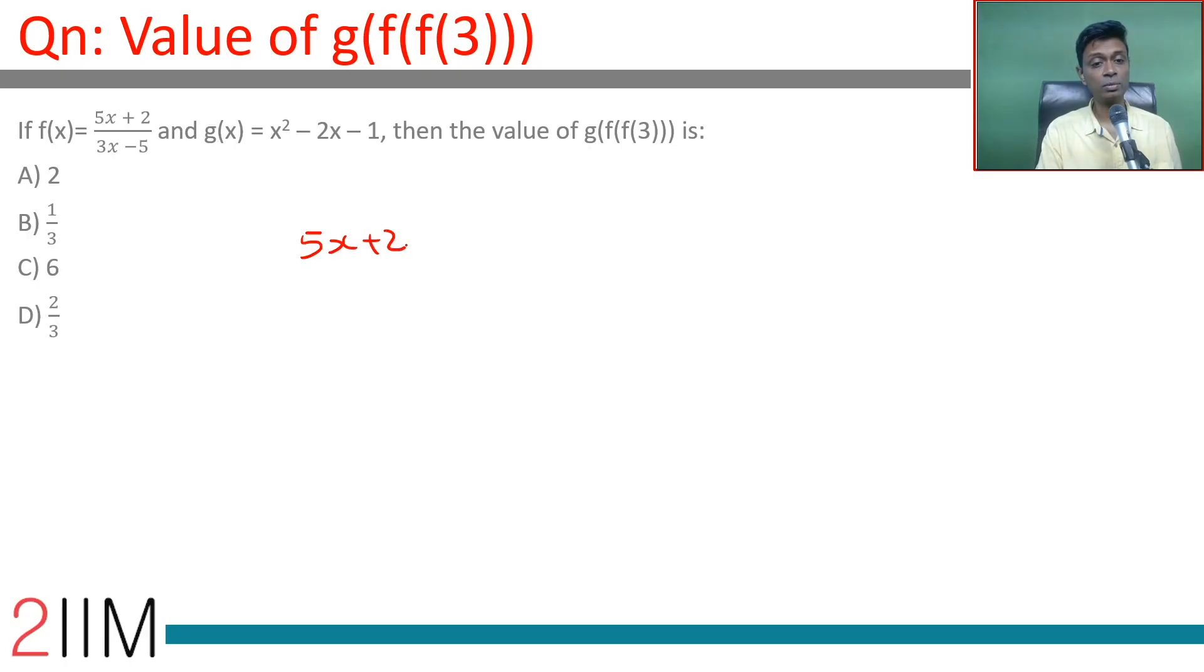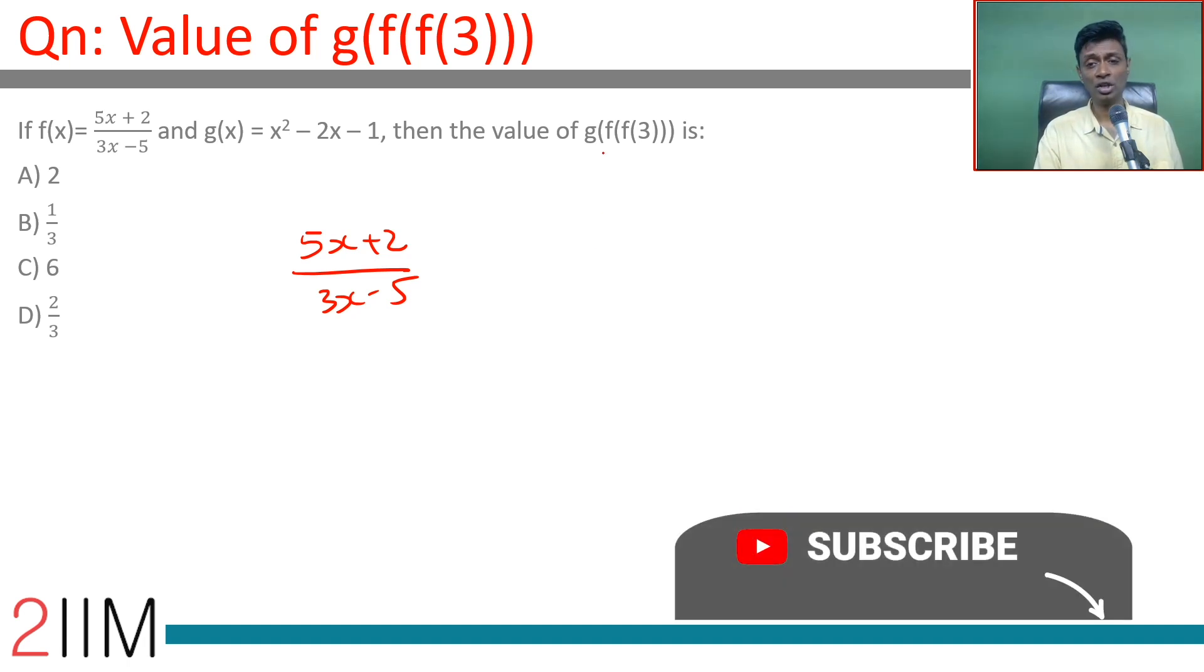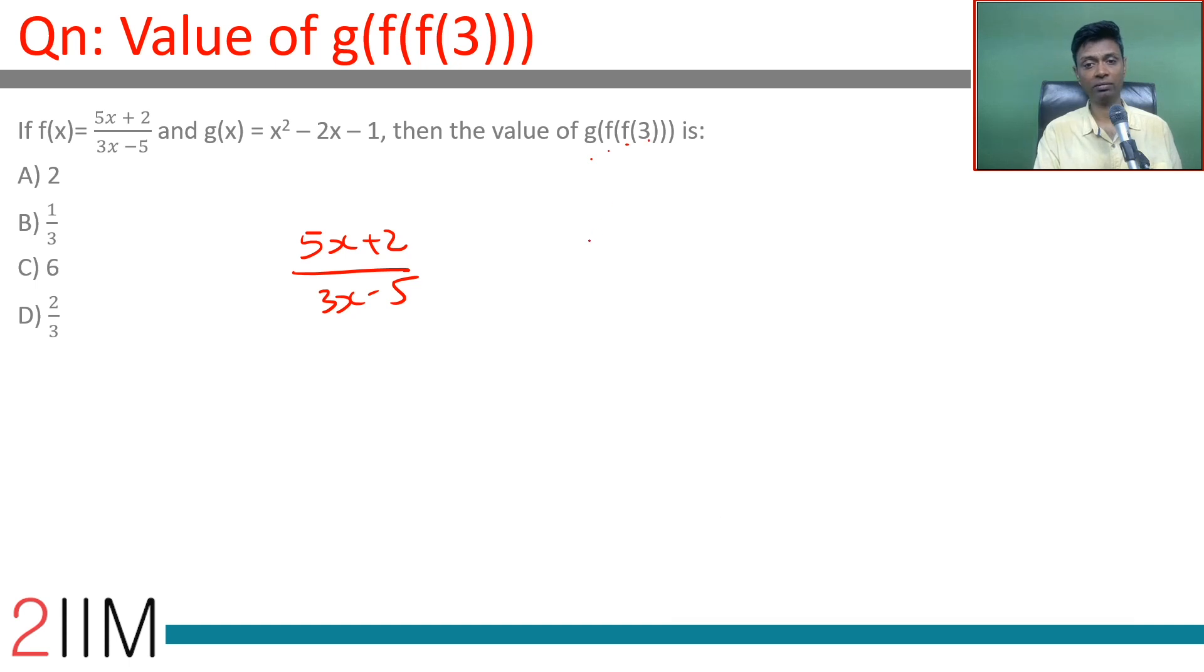f(x) equals 5x plus 2 by 3x minus 5, and g(x) is x square minus 2x minus 1, which equals (x minus 1) whole square minus 2. I'm going to find g(f(f(3))).